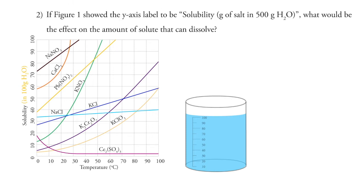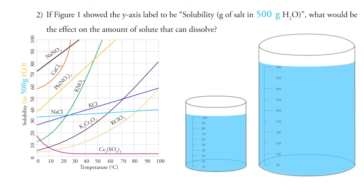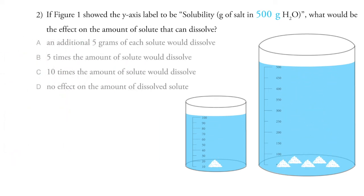The question says, well, if the chart instead said 500 grams instead of 100 grams here, then we know we would be able to put in five times the amount of solute and still get the same results. So the best answer is B. We increase the amount of water by five, we can increase the amount of solutes that come in by five.